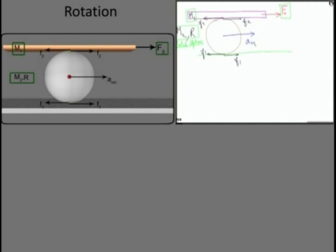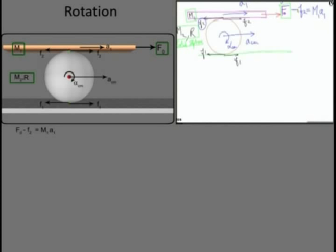This sphere is going to have translational motion — I am assuming the acceleration of the center of mass to be ACM — and there will be rotational motion; let the angular acceleration be alpha. I will make a free body diagram of the plank. The only horizontal forces acting on the plank are F0 and F2. The equation for horizontal motion: F0 minus F2 equals mass times acceleration A1.